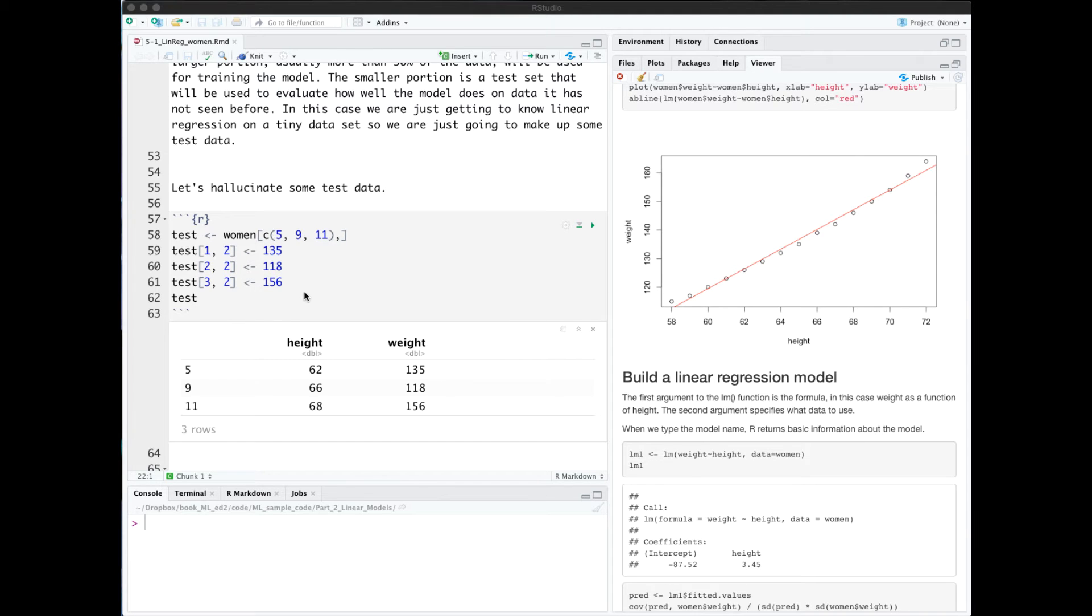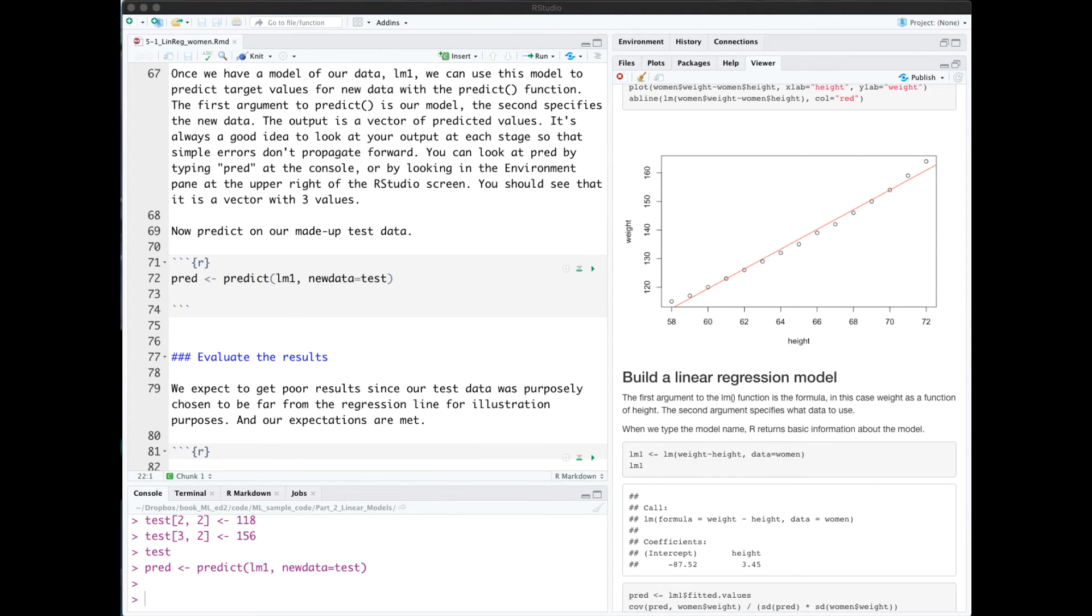I do that in this code block here. Then we're going to use the built-in predict function to make predictions for our test data. So the first argument is our model, lm1, and we specify what our test data is. This will create a vector of predictions.